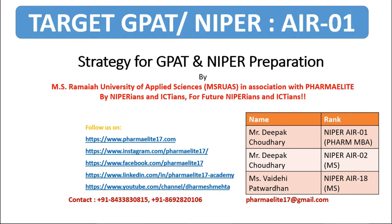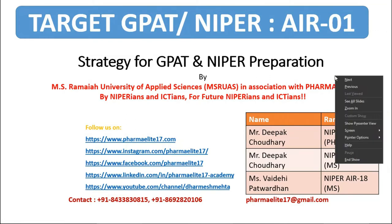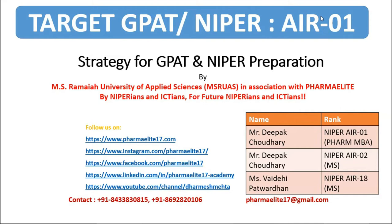I would like to show you the rankers of NIPER 2020 — last year's ranks. We have achieved All India rank 01 in the Farm MBA category. The same student achieved All India rank 02 in the MS category, rank 18, and so on. We have achieved many more ranks in 2020 as well as 2021 — All India rank 8, 20, 15. So what is it that these students are doing differently compared to the ones who are not qualifying?